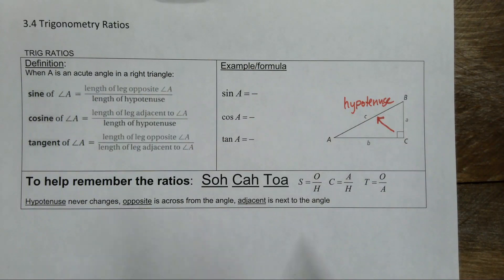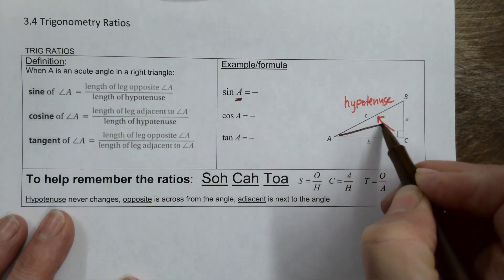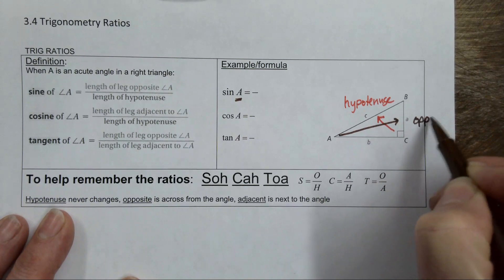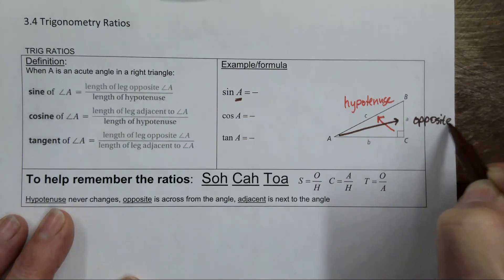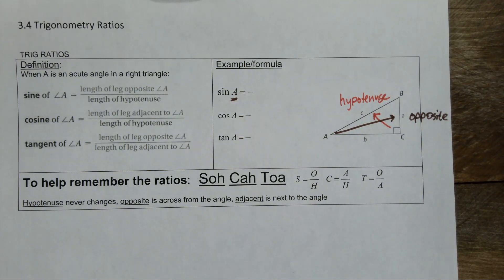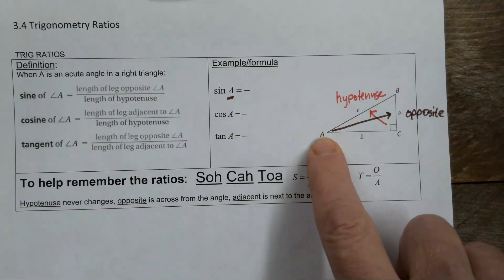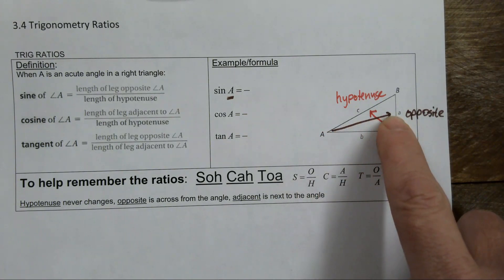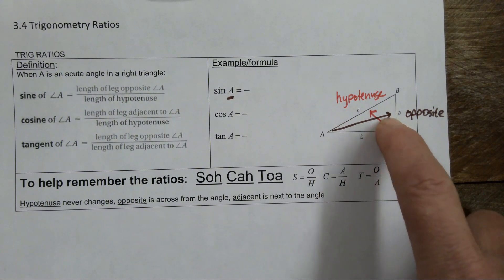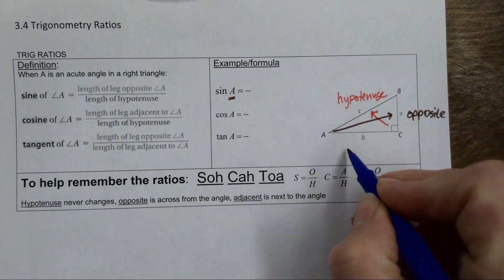If I'm looking here at angle A, I would go across from A to find the opposite side. The thing about opposite sides and adjacent sides is it depends on the angle that you're looking at.